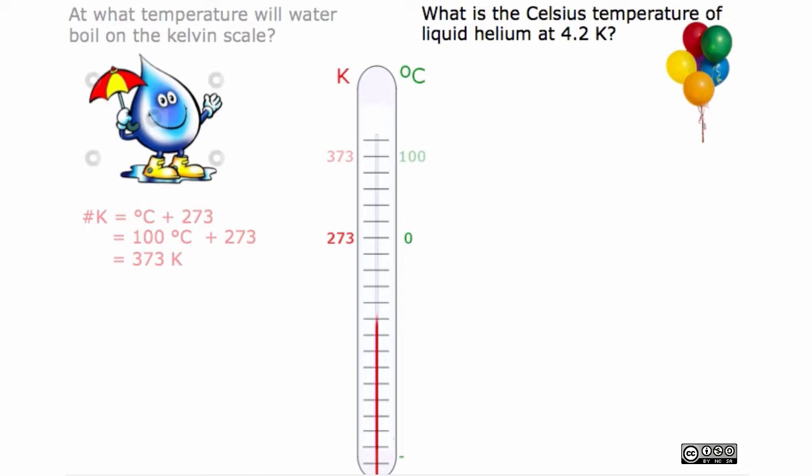As we can see now, we have Celsius is equal to the number of Kelvin minus 273.